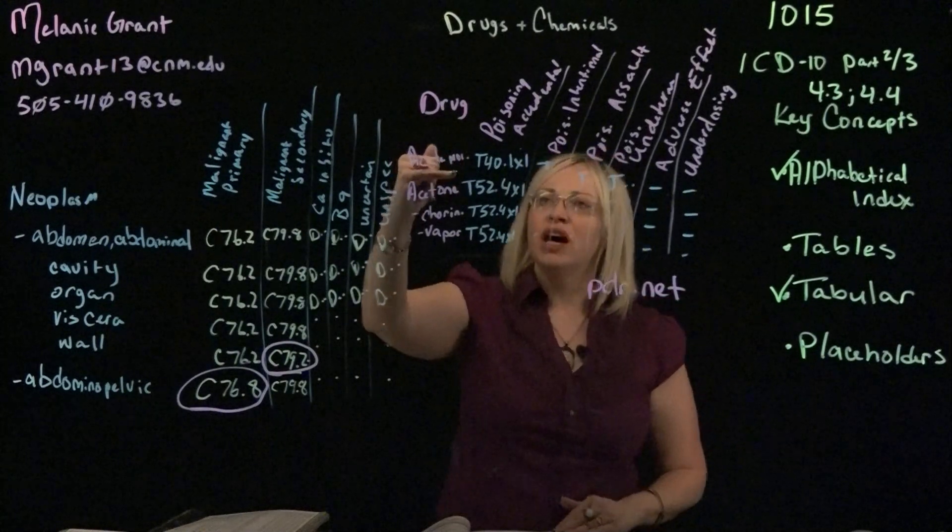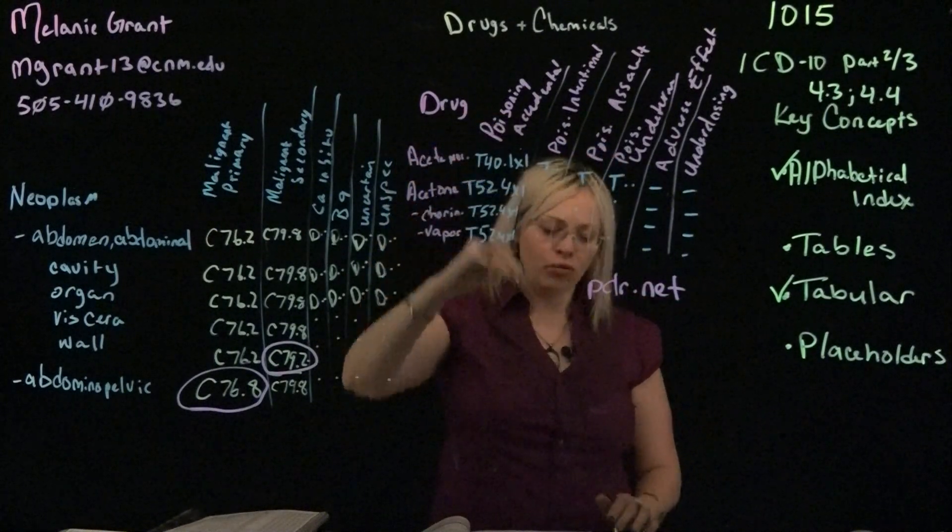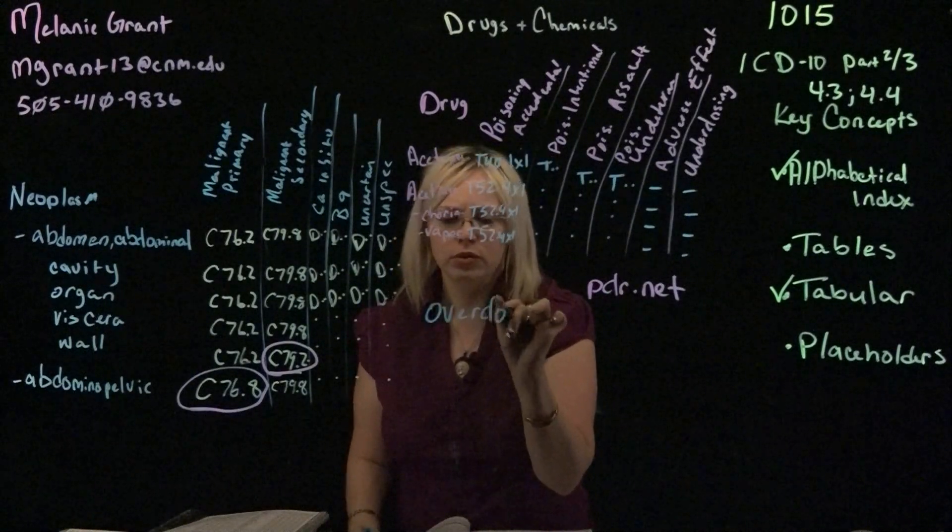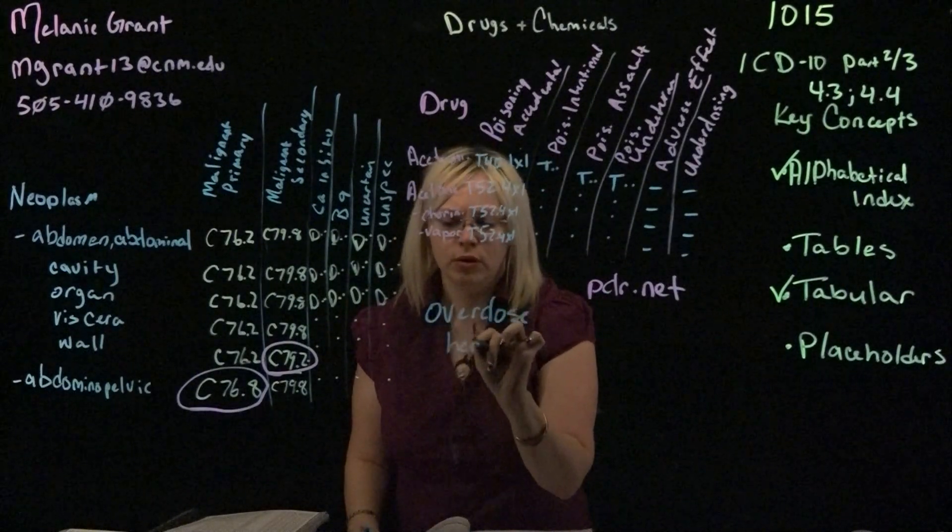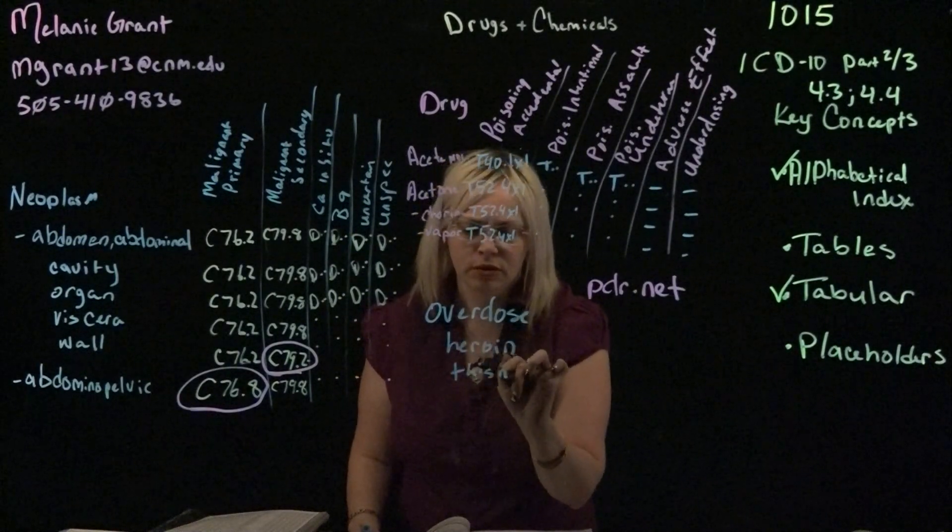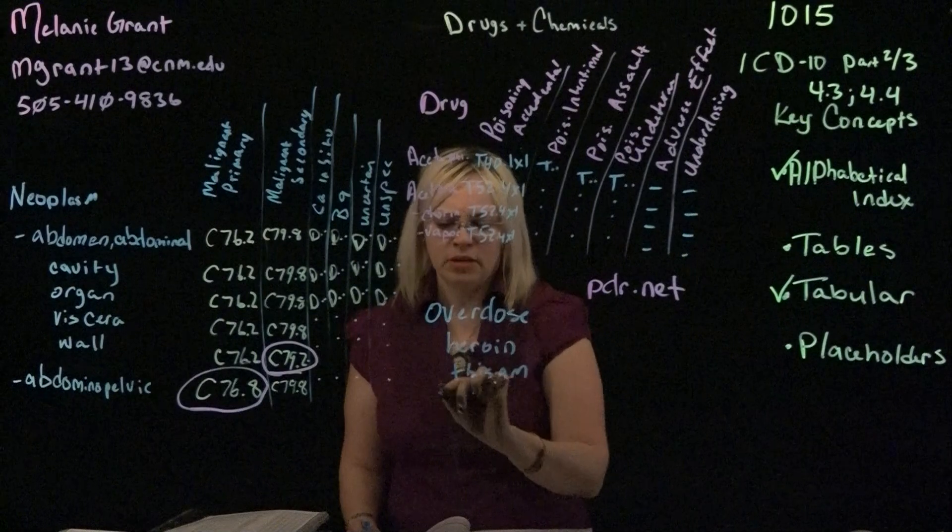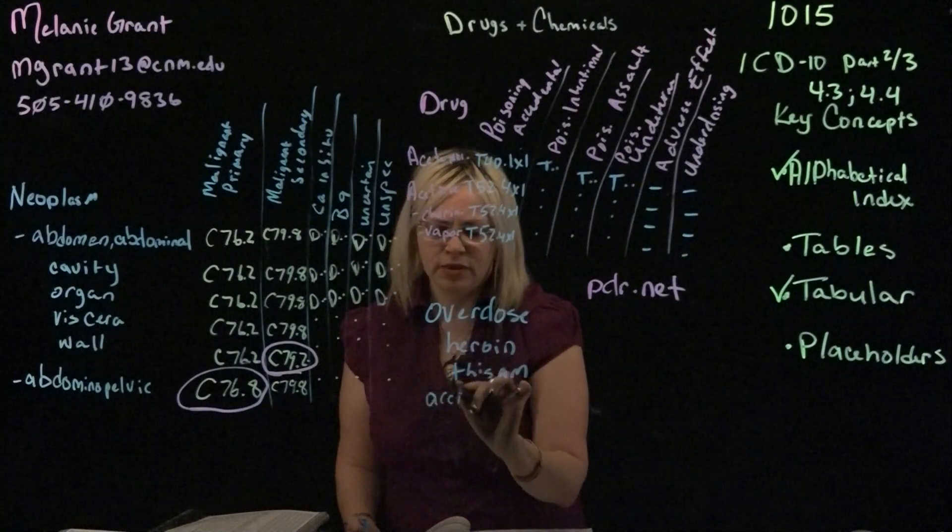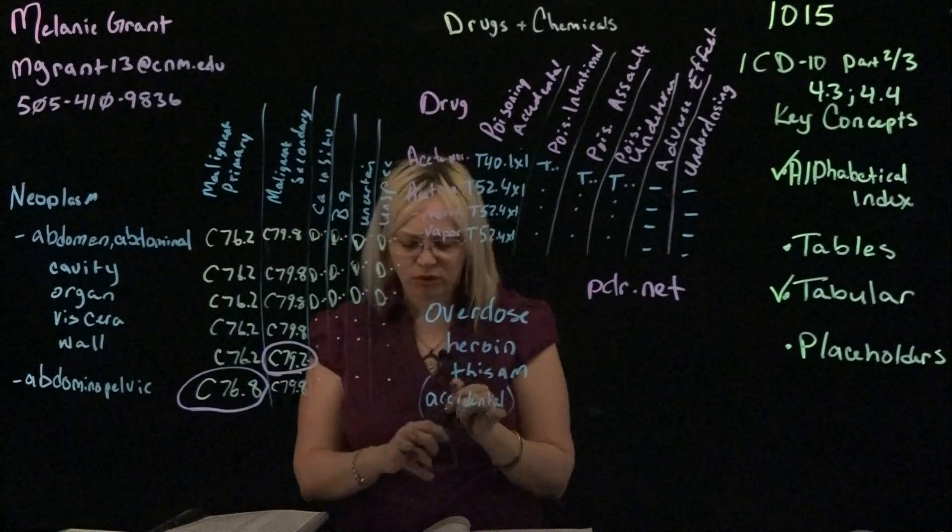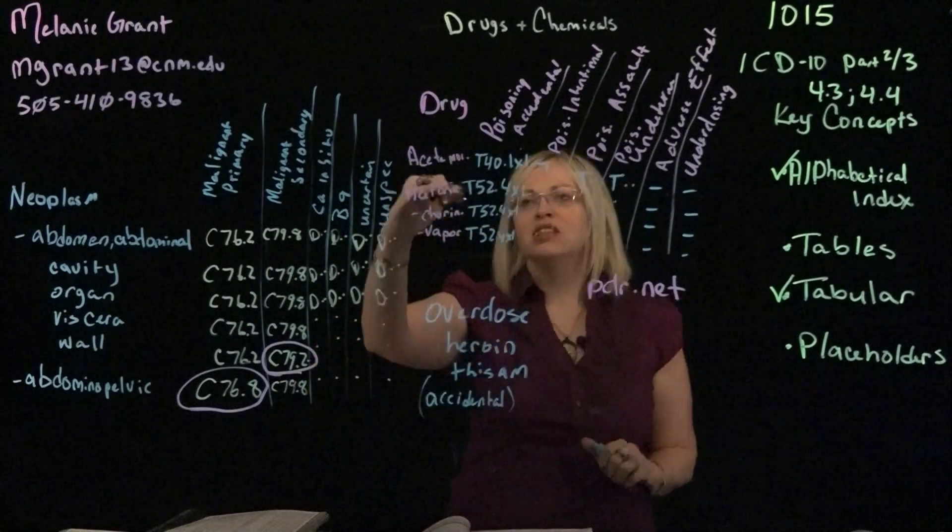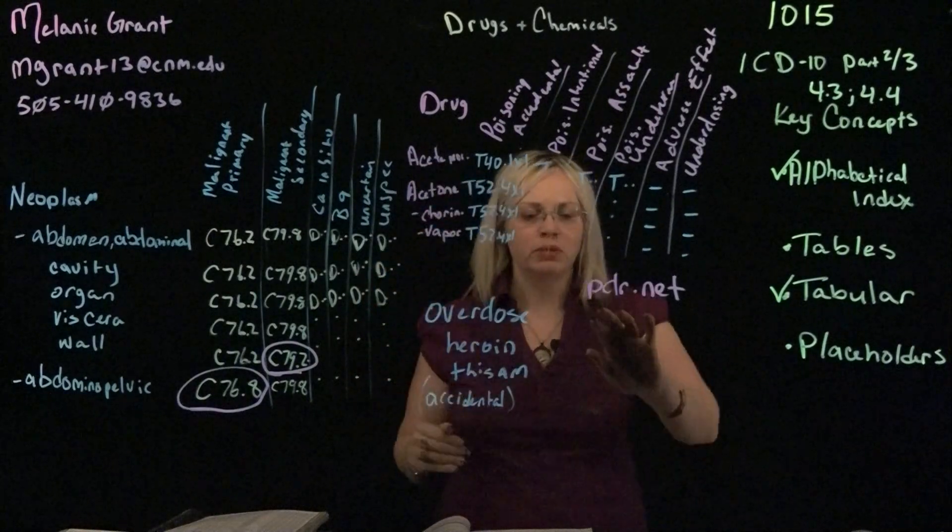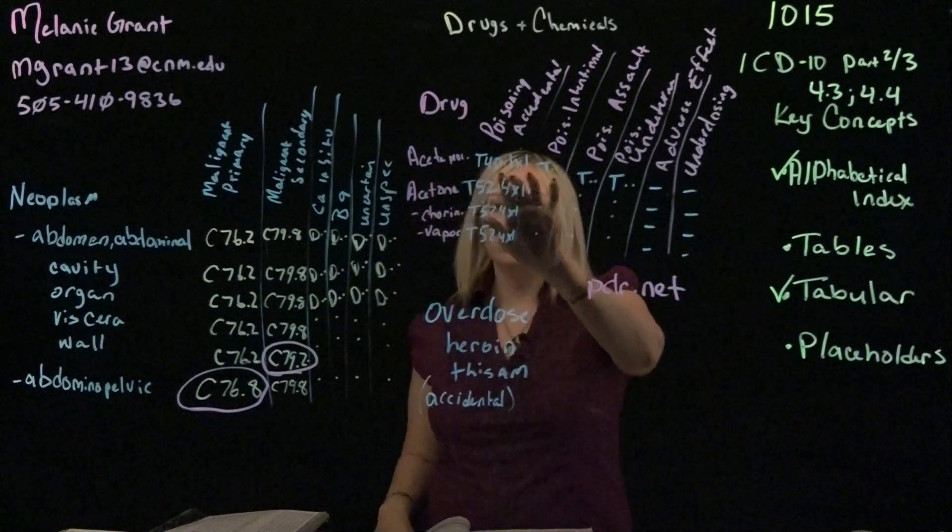You'll find the drug. Let's say that they overdosed on heroin by accident. And we'll say it happened this morning. Accidental. They weren't trying to. They just happened to overdose. Then we're going to determine that's poisoning accidental, acetamorphine, which we'll find from the PDR.net and we'll look at that code.